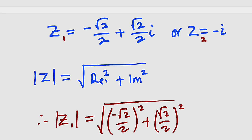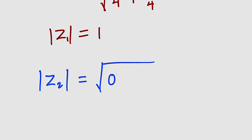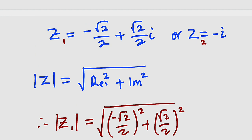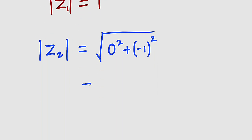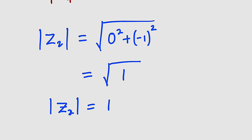For z₂ = -i, the real part is zero and the imaginary part is -1. So |z₂| = √(0² + (-1)²) = √(0 + 1) = √1 = 1. Therefore the modulus of z equals 1 in both cases.